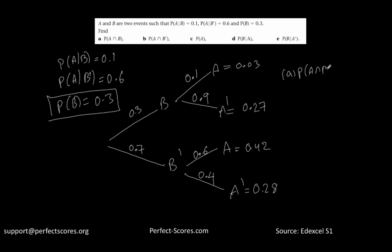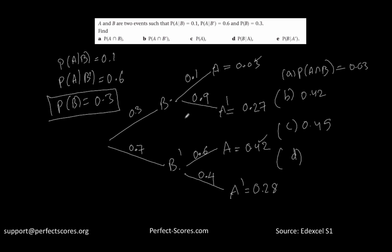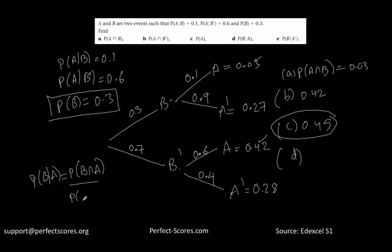Part A asks for the probability of A intersection B, which is 0.03. Part B asks for the probability of A intersection B-not, which is 0.42. Part C asks for the probability of A, which is 0.03 plus 0.42, equaling 0.45. Part D asks for the probability of B given that A has occurred. That equals the probability of B intersection A divided by the probability of A, which is 0.03 divided by 0.45.